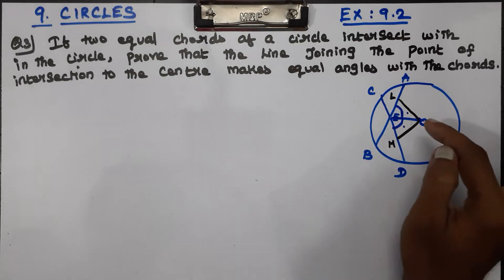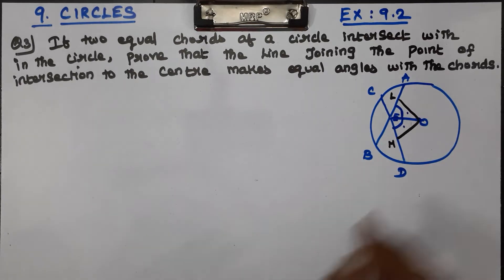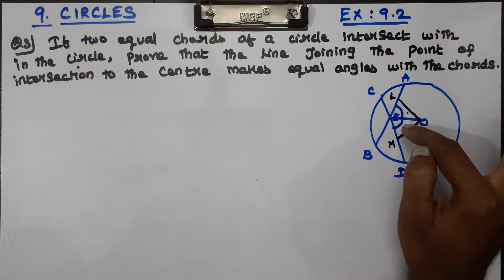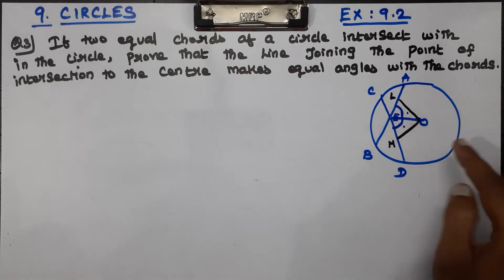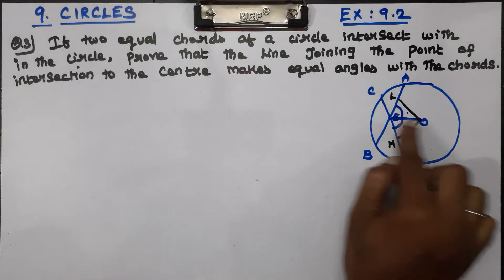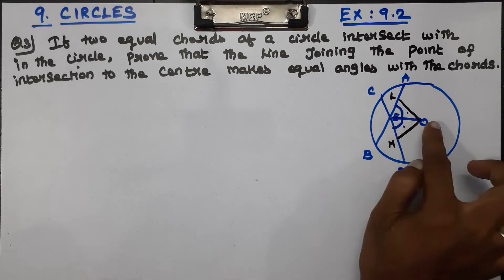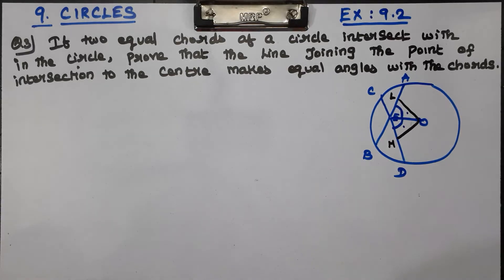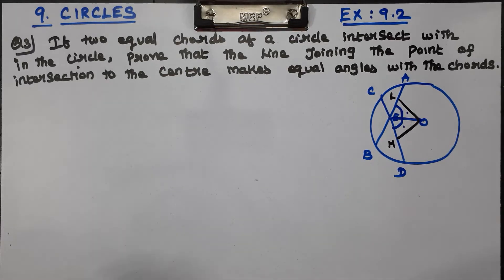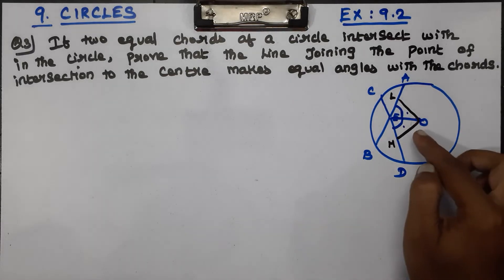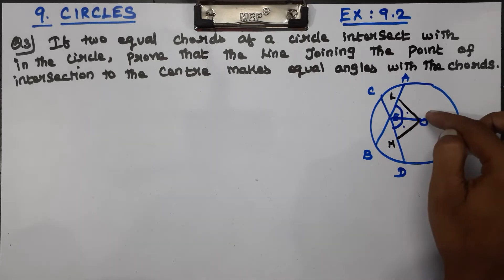Let's look at the two angles. The two angles consist of two triangles: triangle E, O, L and triangle E, O, M. Let's examine these two triangles.